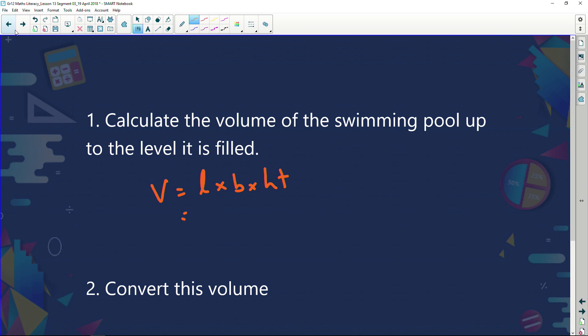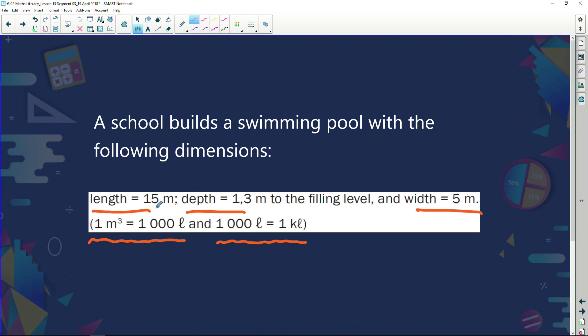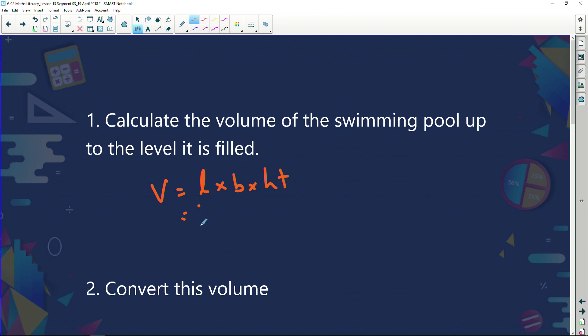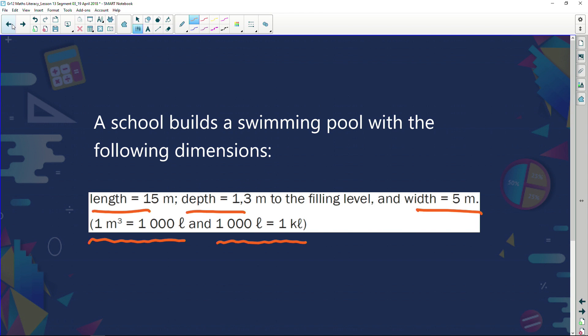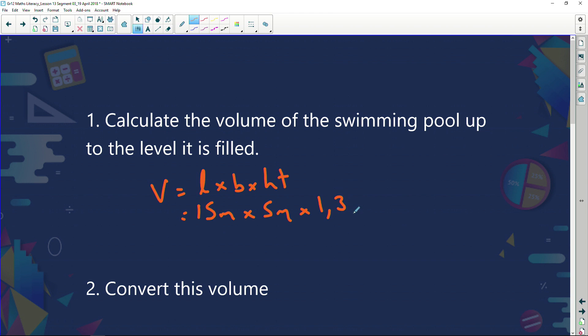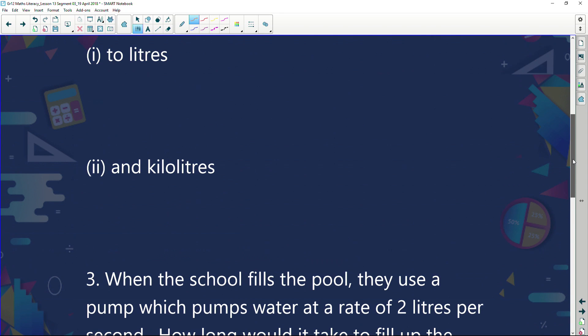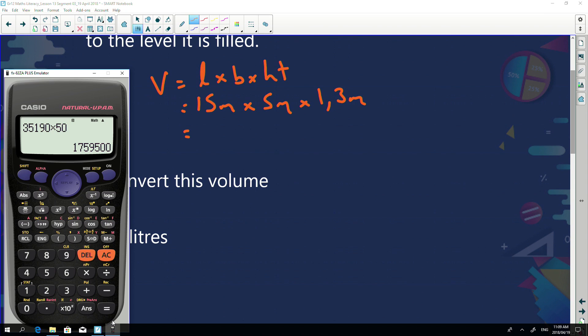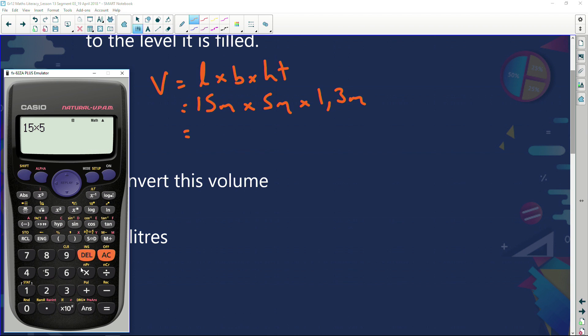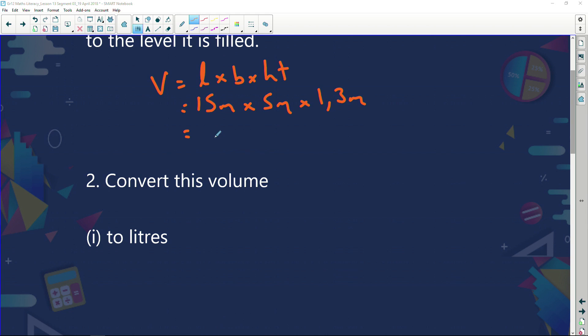So what is the question that they're asking us? Calculate the volume of the swimming pool up to the level it is filled. So volume is equal to length times breadth times height. What is my length? My length is 15 and my width is 5. So I've got 15 meters times 5 meters. And how high is the pool water? It says the depth length to the filling level is 1.3 meters. So we're going to multiply that by 1.3 meters. Let's have a look at this quickly. Calculate out 15 multiply by 5, multiply by 1.3. And I get an answer of 97.5. So I've got 97.5 meters cubed.